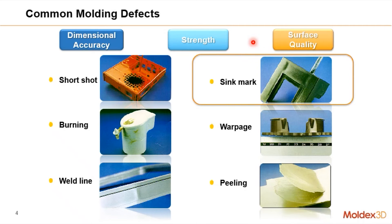It all comes down to whether that sink mark is visible to the end customer's eye — the user of the part. Sink marks are visible on the surface of the part, and from a visibility standpoint it could be a combination of how deep the sink is, what the color and texture of the surface are, and what kind of lighting conditions are present. These factors all define how visible or clear that sink mark is.